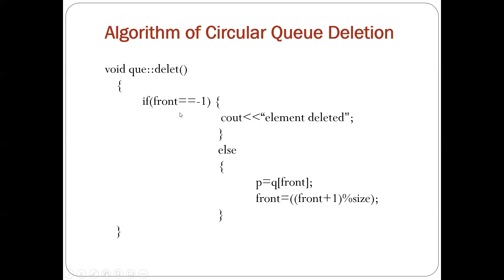Now this is the deletion code. At the time of deletion, if front equals minus 1 then the queue is empty. Otherwise, p equals q[front] — the element at the front end is taken out into variable p and displayed — then the front end is incremented to point to the next element. Again here front equals (front plus 1) mod size — modular incrementation is used instead of front plus plus. So always remember: in both insertion and deletion of the circular queue, instead of normal incrementation we use modular incrementation.